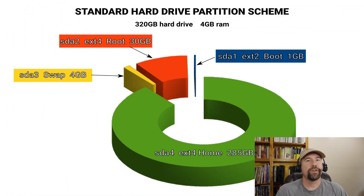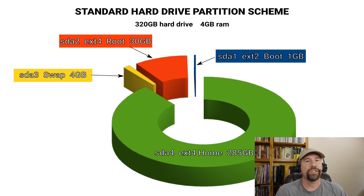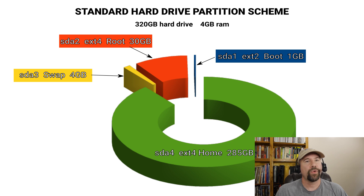Our first scenario is a standard mechanical hard drive of 320 gigabytes storage, although the storage capacity really isn't too important here, and we're on a system with four gigabytes of RAM. Since mechanical drives are much slower than SSDs, I want to set my partitions up to maximize speed. My first partition will be my boot partition, formatted in EXT2 — not the usual EXT4. I set the capacity at one gigabyte, but you could probably get by with only 512 megabytes.